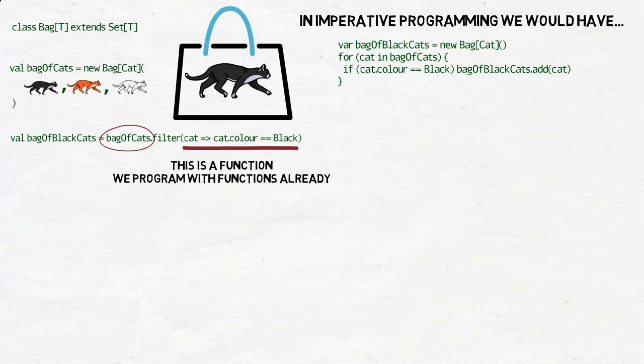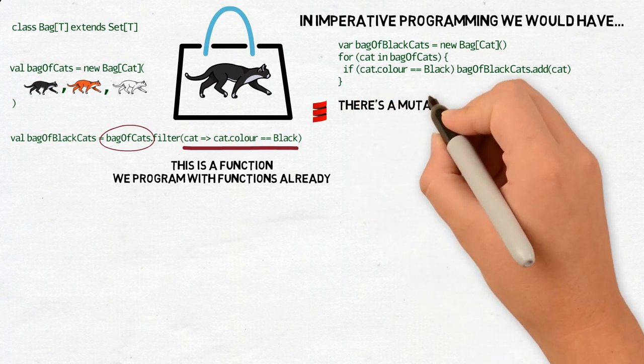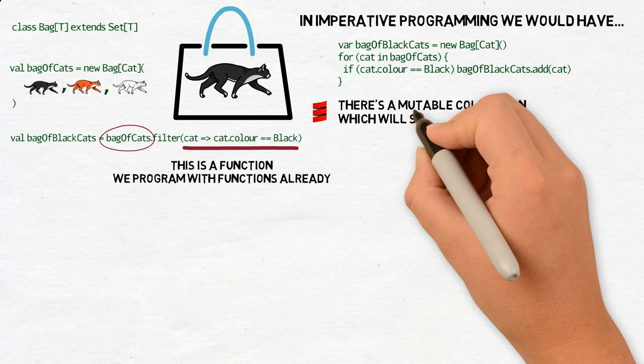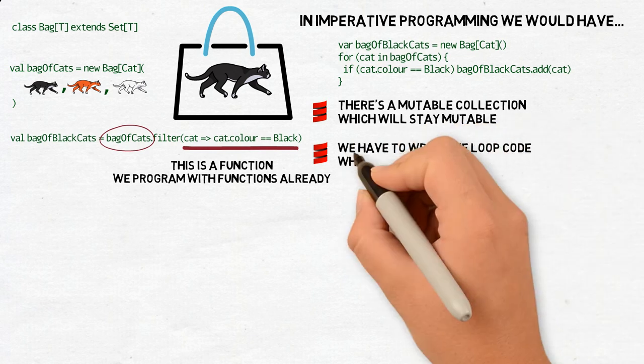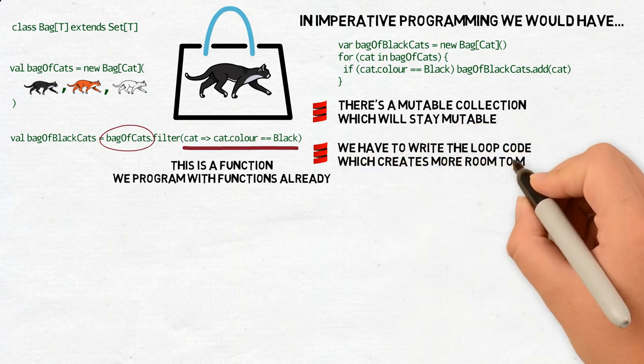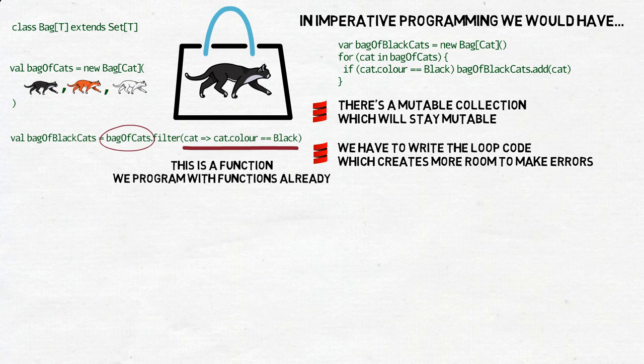Two problems here. First, the mutable bag of black cats will stay mutable even after the loop finishes, which makes the code vulnerable to someone adding more cats later. Second, we have to write our own loop functionality, even if it's the same functionality we were writing again and again for years since our first programming course. It's boring, it takes time, and because of the routine, it's even possible that we will write it wrong and try to access an overflowing cat and get a cat-out-of-range exception.